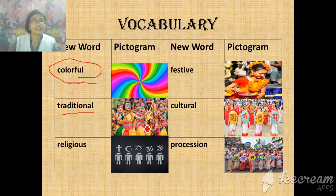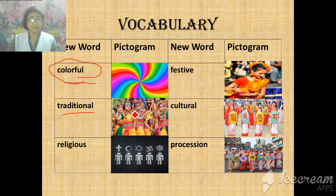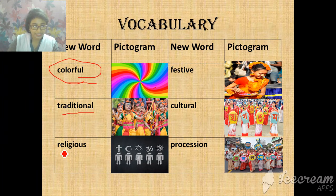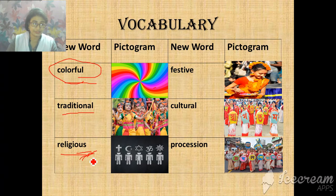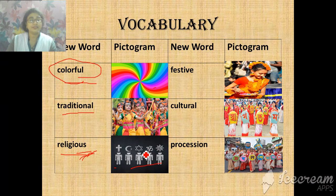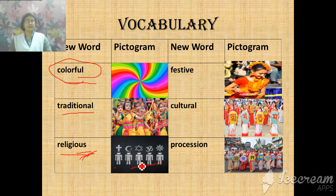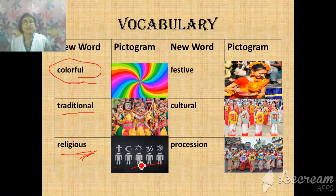Traditional. The picture shows something happening for a long time ago — that is called traditional. And religious — the human being following the rules and regulations of religion is religious. So many Muslims, Christians, and so many religions in this picture. The people are religious.